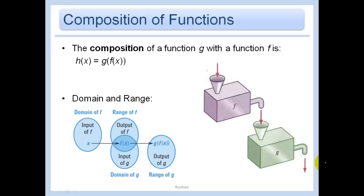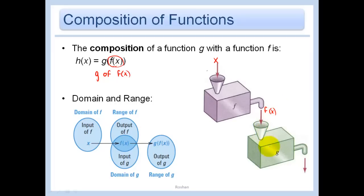Now we get to compositions of functions. A composition is defined as g of f of x — I do g to f of x. I start with f of x and then do g to it. If I look at a function machine: I put an x in, it pops f of x out. Then I stick that f of x into the g machine, and it pops out g of f of x. So this is a composition of functions.